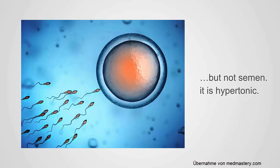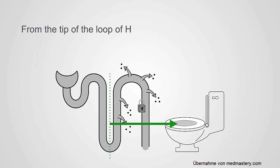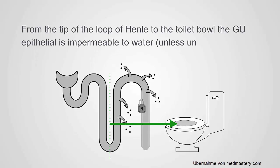The only exception is that semen is slightly hypertonic, but the primary exception is the kidney and GU tract. From the tip of the loop of Henle to the toilet bowl, the GU epithelium is impermeable to water unless it's unlocked by ADH. This means the GU tract is able to build up concentration gradients and excrete fluid that is either more dilute than plasma or more concentrated than plasma, and that allows it to regulate the osmolality of the body.